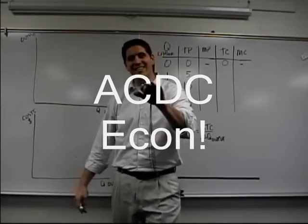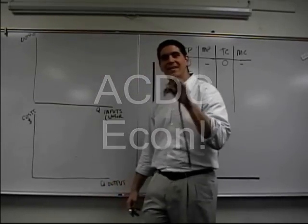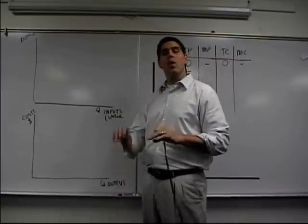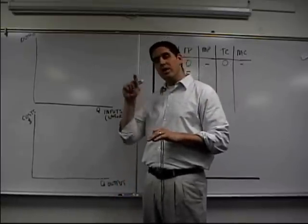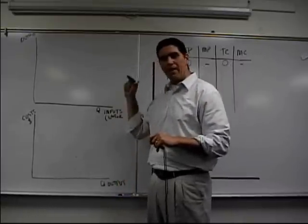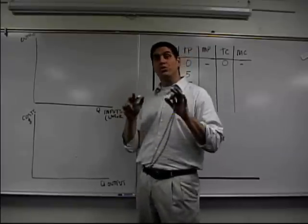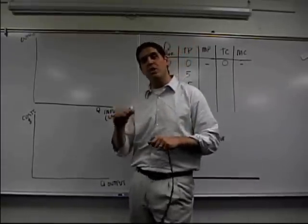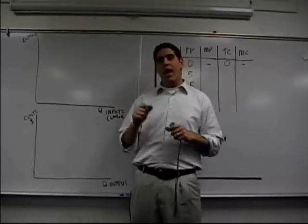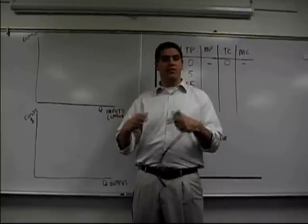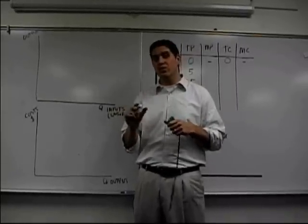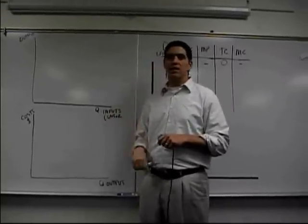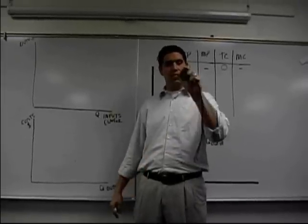Hey, how are you doing? This is Mr. Clifford with ACDC Econ, Key Econ Concepts in 60 Seconds. Today's a hard one. We're going to talk about why the marginal cost curve is U-shaped — it goes down, it goes back up. Your students or your teacher already taught you about the law of diminishing marginal returns: as you add additional inputs, variable resources, to fixed resources, the additional output eventually will start to fall. You need that concept to understand this concept. Let's jump into it in 60 seconds.